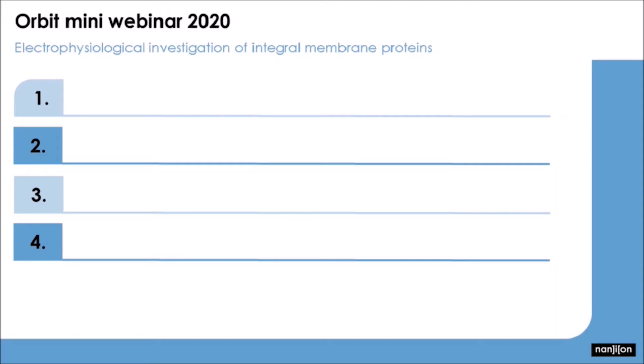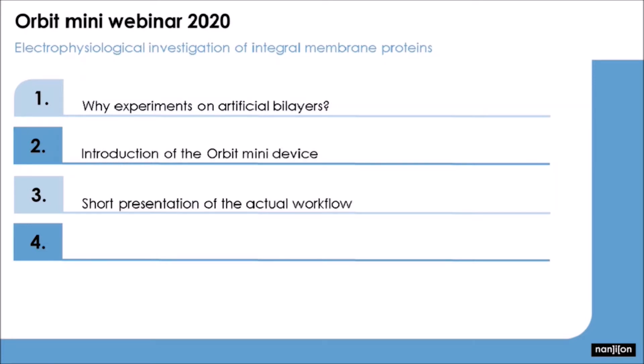So the agenda for today would be that I swiftly explain why you would perform bilayer experiments in the first place and why I would recommend to use the Orbit Mini. I would subsequently showcase the actual workflow of an experiment on the Orbit Mini by using the translocation of polymers through alpha-hemolysin as an example.